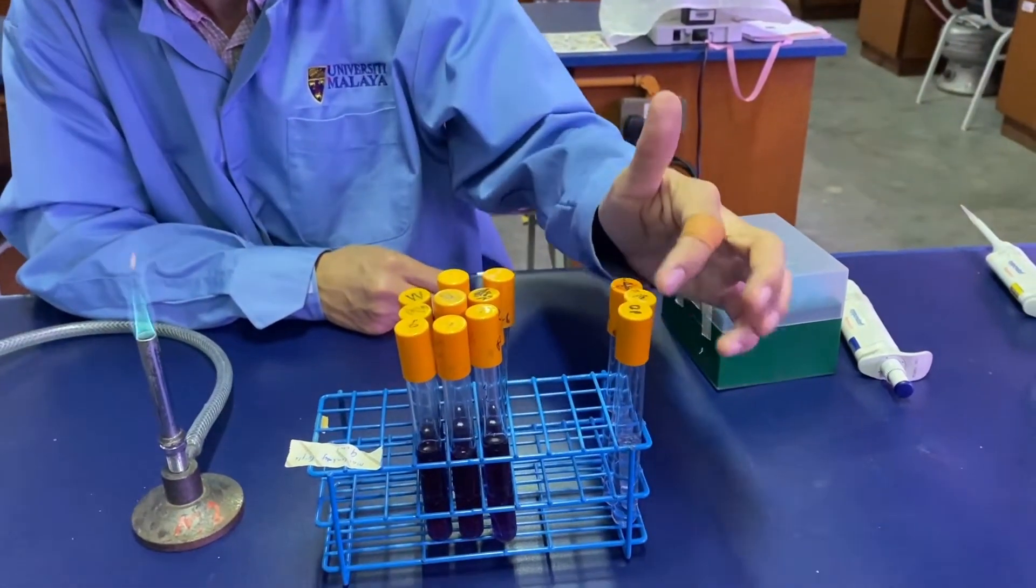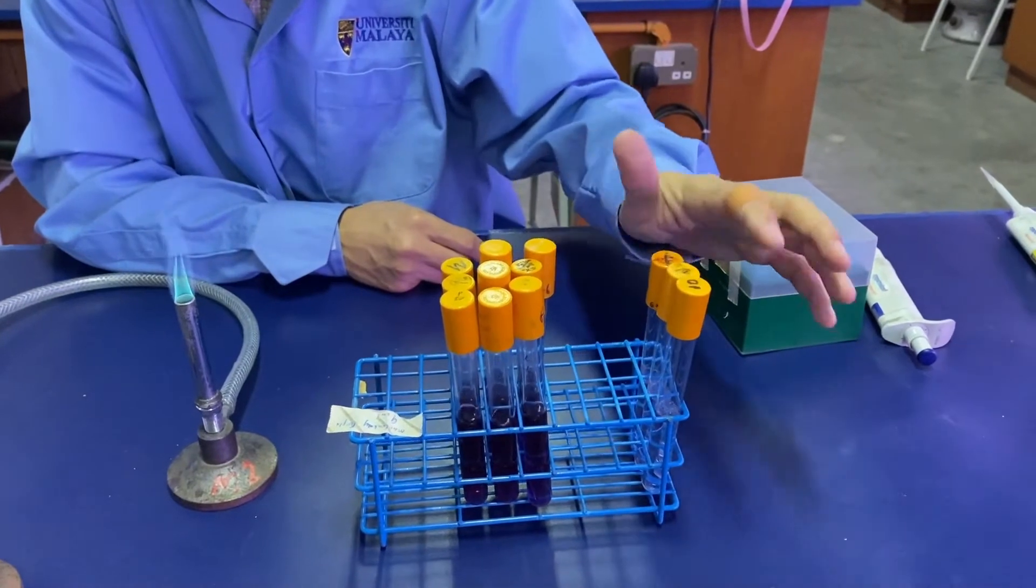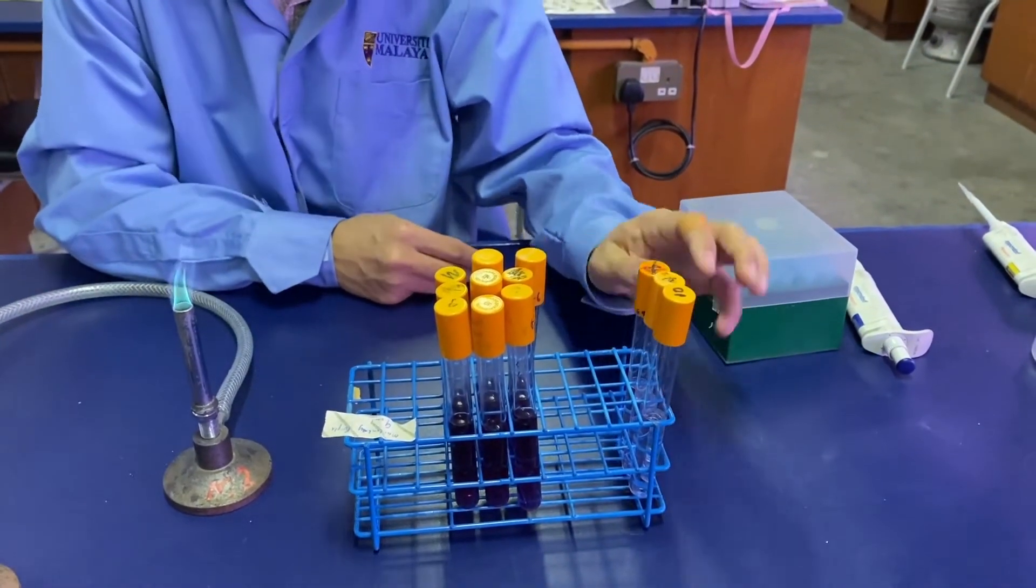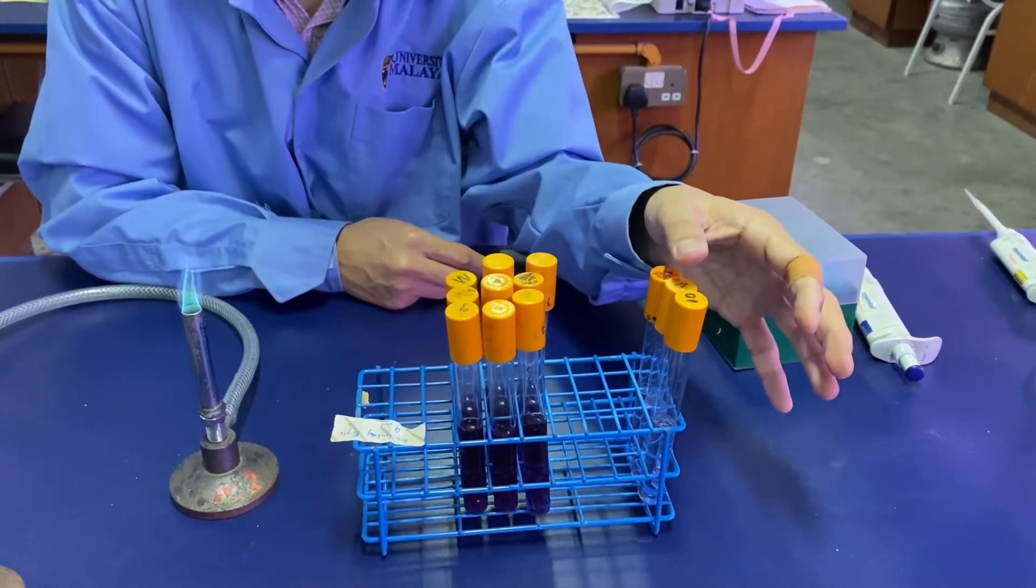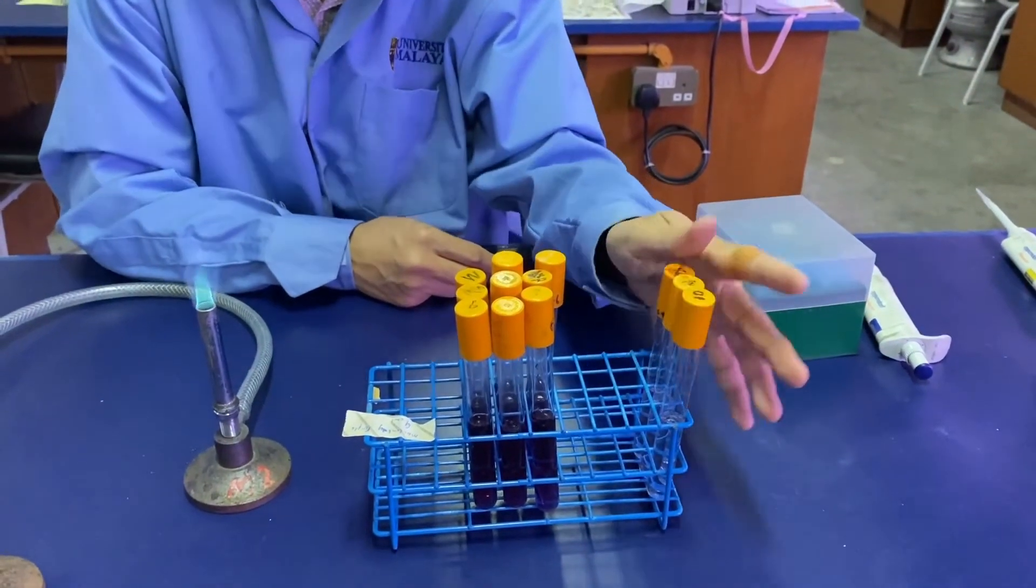For the sample, we'll be carrying out serial dilution to three orders: minus one, minus two, and minus three.